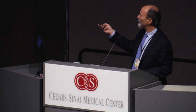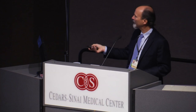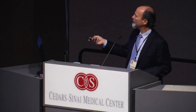Another example: a renal cell carcinoma clear cell type in a full nephrectomy specimen where the tumor is extending into the renal vein. This is a feature we analyze both grossly and microscopically because tumor extension into that vein upstages the overall tumor stage and is associated with generally adverse outcome — it's telling us the tumor is behaving more aggressively. We might also receive a lymph node showing metastatic clear cell renal cell carcinoma, which we analyze both grossly and microscopically.